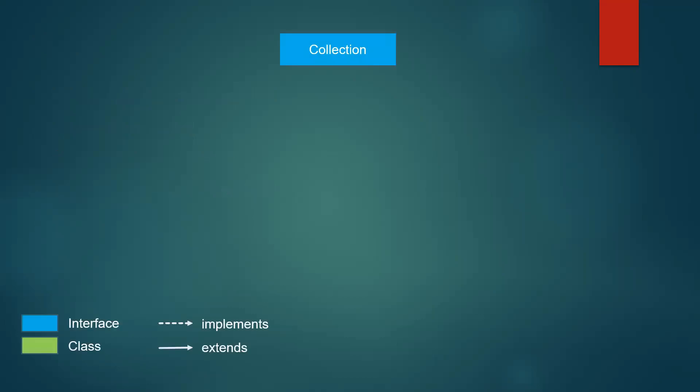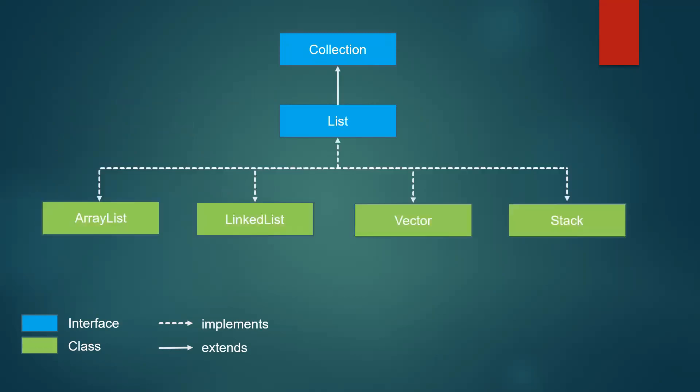Now let us see the list hierarchy. Collection is an interface, and list is another interface which extends the collection interface. The implementation classes of list are ArrayList, LinkedList, Vector, and Stack. These are the four classes which implement the list interface.